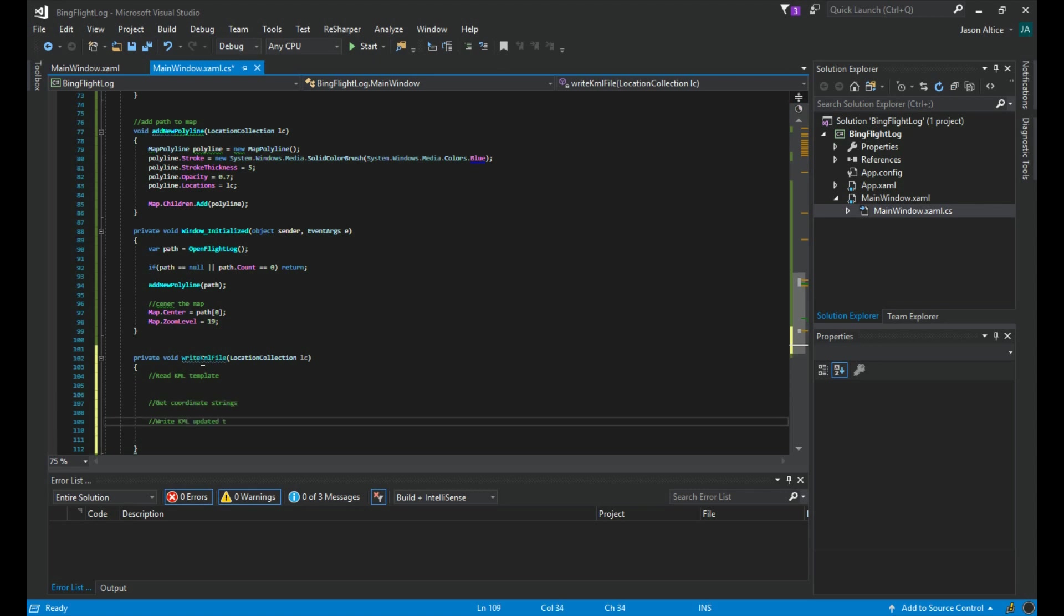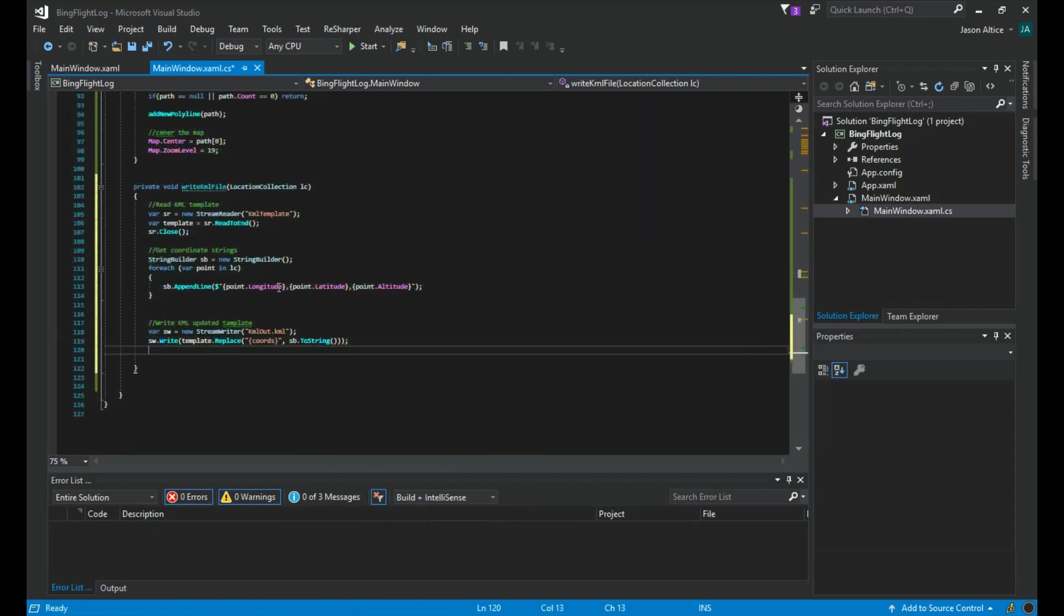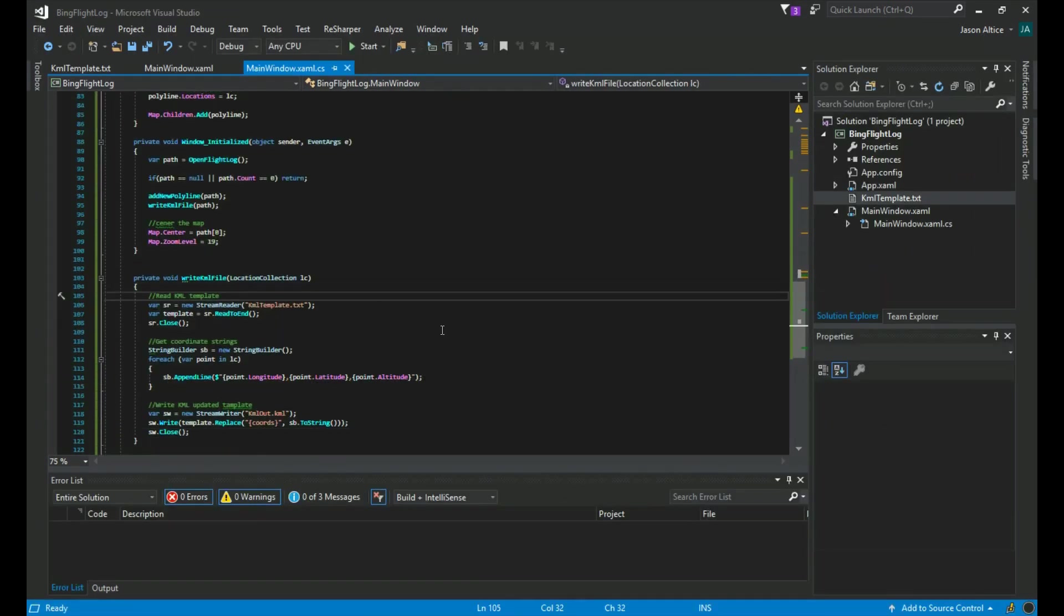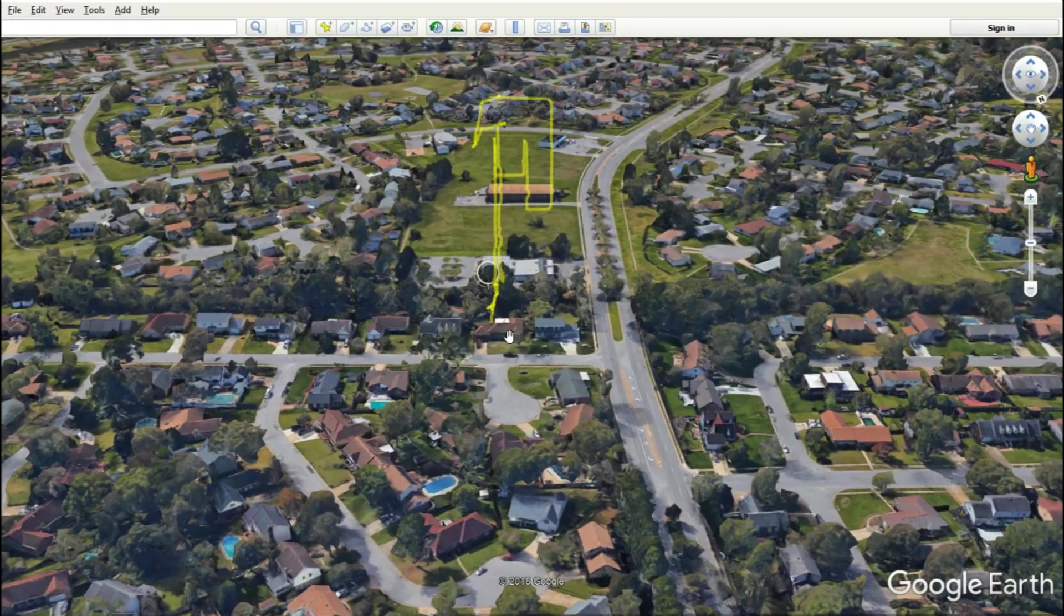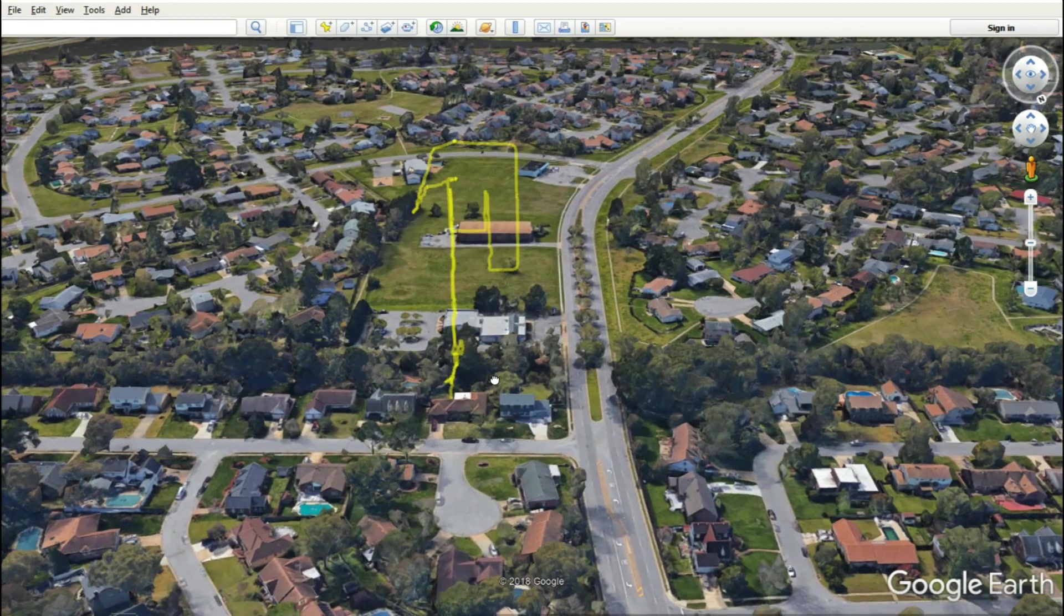This next part is how to translate your drone paths into KML so you can display it in Google Earth. Google Earth is pretty cool because you can see it in three dimensions and as you can see here, I wrote the word high.